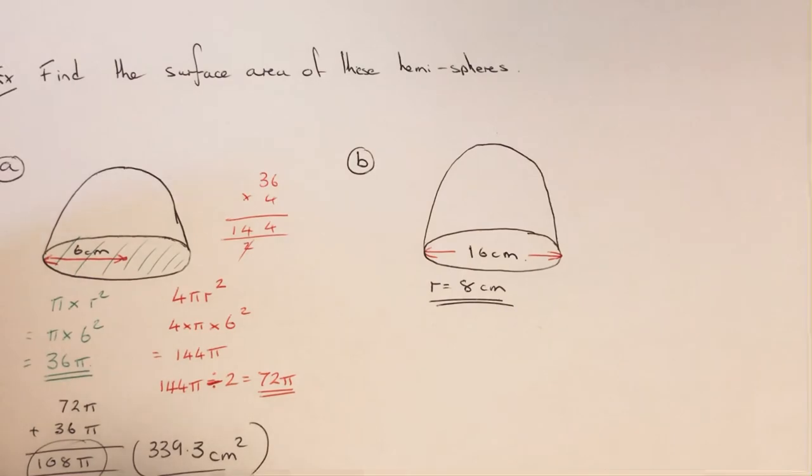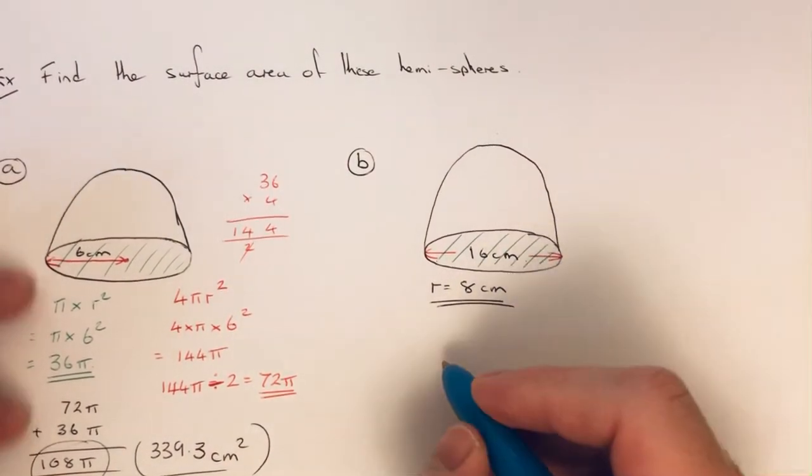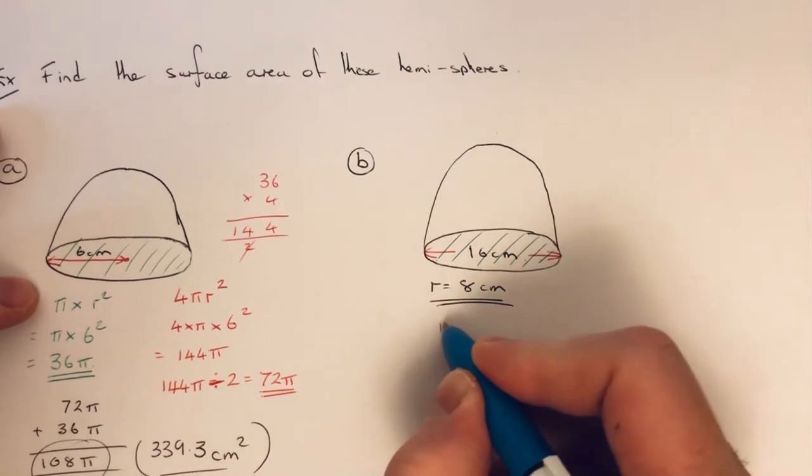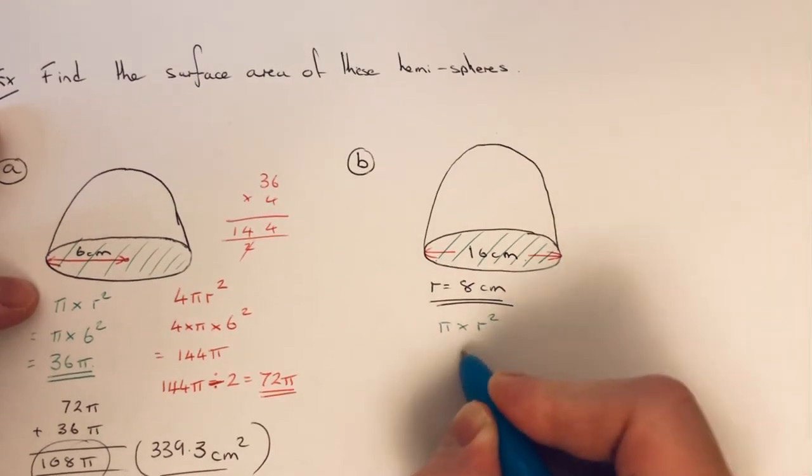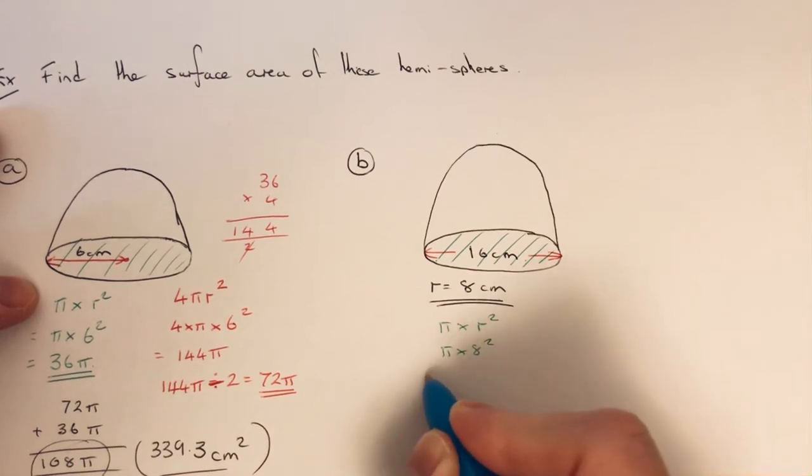So if we start off with the area of the circle at the bottom. To find the area of the circle, it's π times radius squared. So we'll do π times 8², 8² is 64, so we'll get 64π.